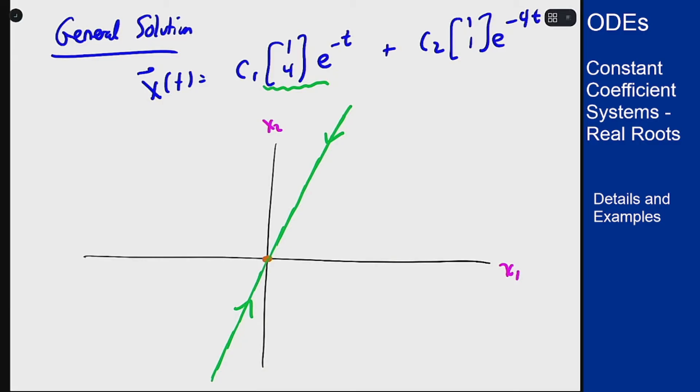Similarly I can take the other solution, [1, 1]e^(-4t), and draw that one as well. That's going to be at a shallower slope because it's [1, 1] not [1, 4], and because it's e^(-4t) this is also going in towards the origin.